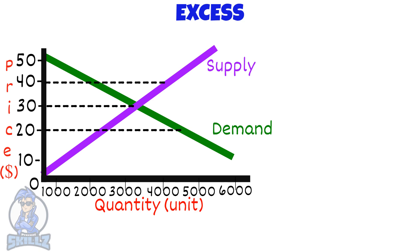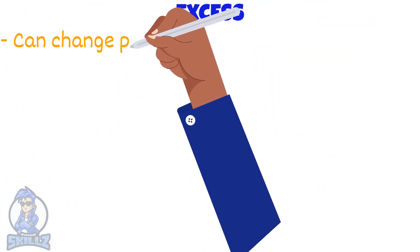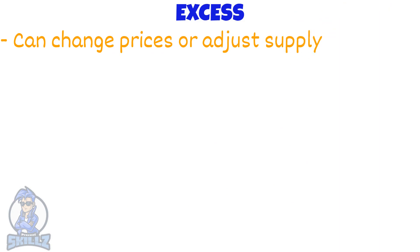Now let's say there is excess supply. This happens when the price is set higher than the equilibrium — let's say P3. Then there would be unsold stock left with the seller, since the supply is more than the demand.